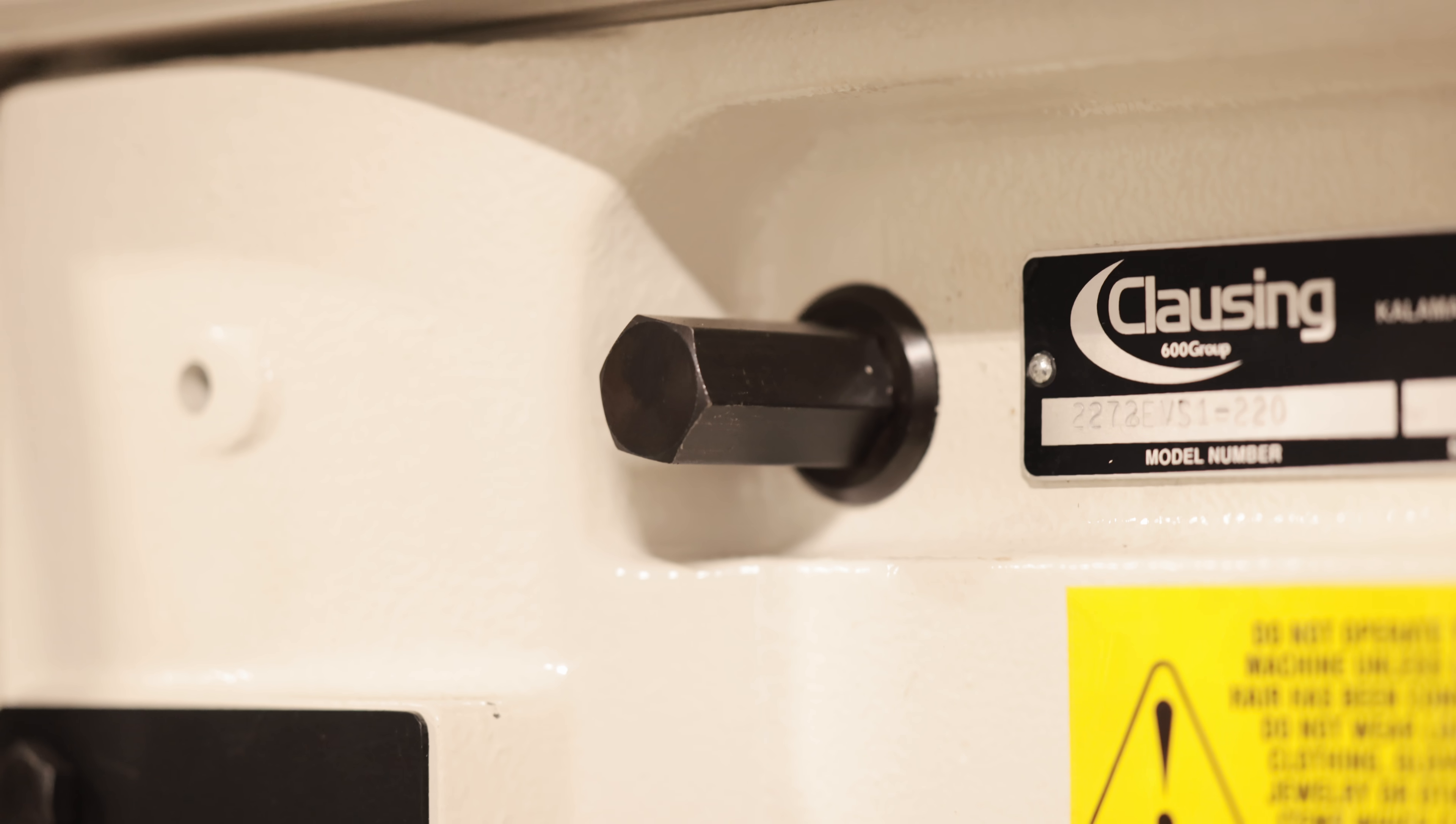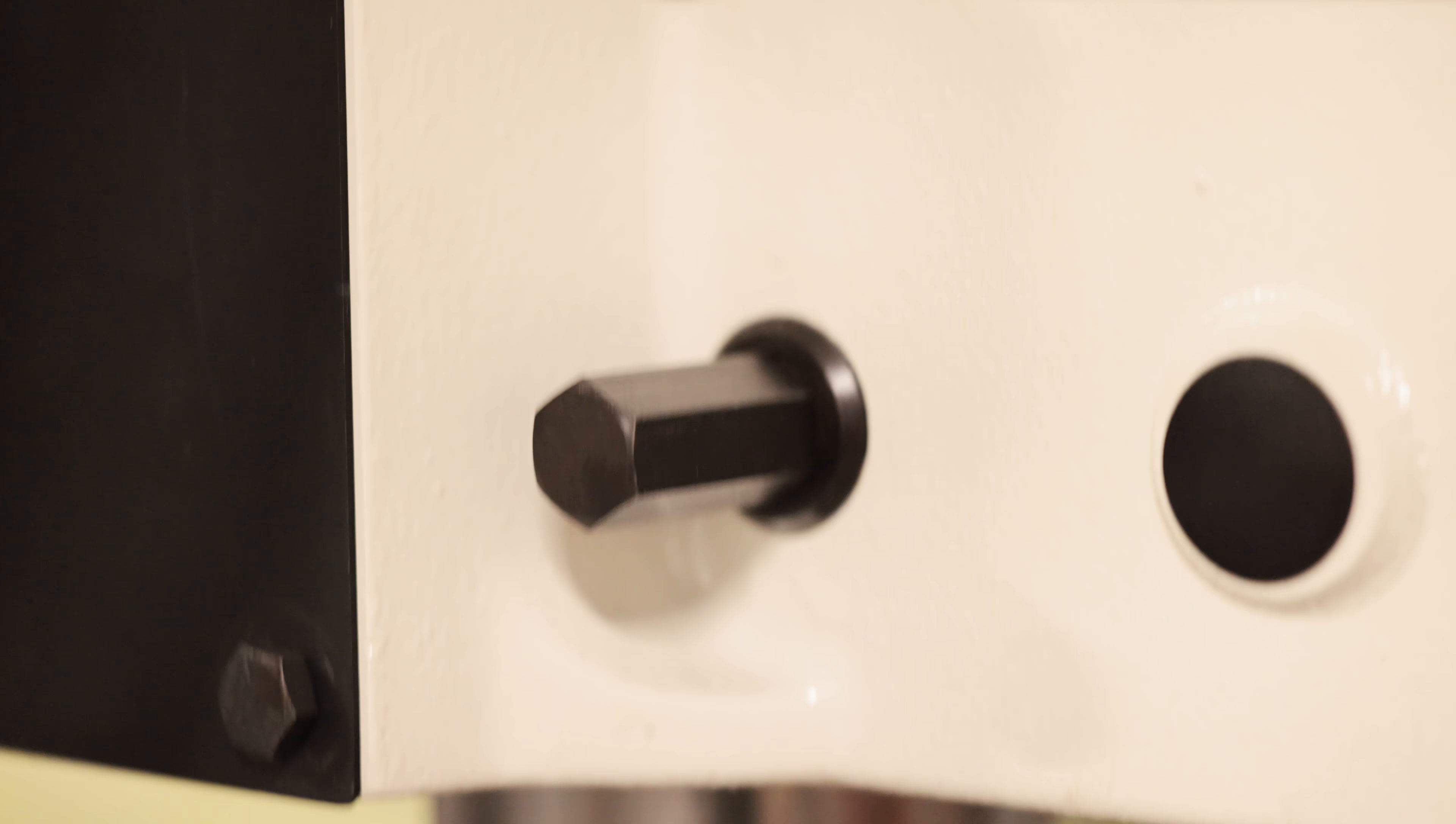These two bolts on the side of the drill press hold the assembly up on the column. Unless you want the drill press to drop on your foot, don't mess with these.